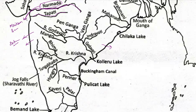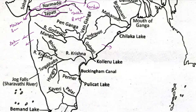On the Narmada river, Sardar Sarovar Dam and Indrasagar Dam are situated. Omkareshwar is also in this area, and here is Kanha National Park. The two main tributaries of Narmada are the Halon river and the Banjar river.